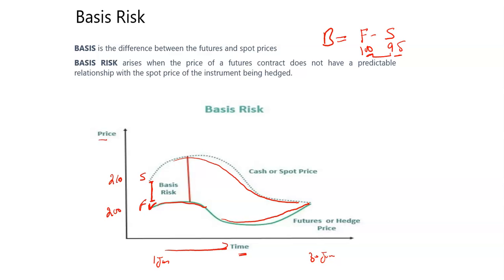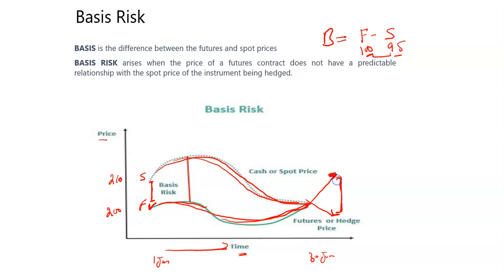Basis Risk is the situation where this relation will not reduce to zero at the end of maturity. For example, at maturity, the future price may fall here and the spot price may fall here, and still there is a difference remaining between these two. Basis is simply the difference between future and spot price today.